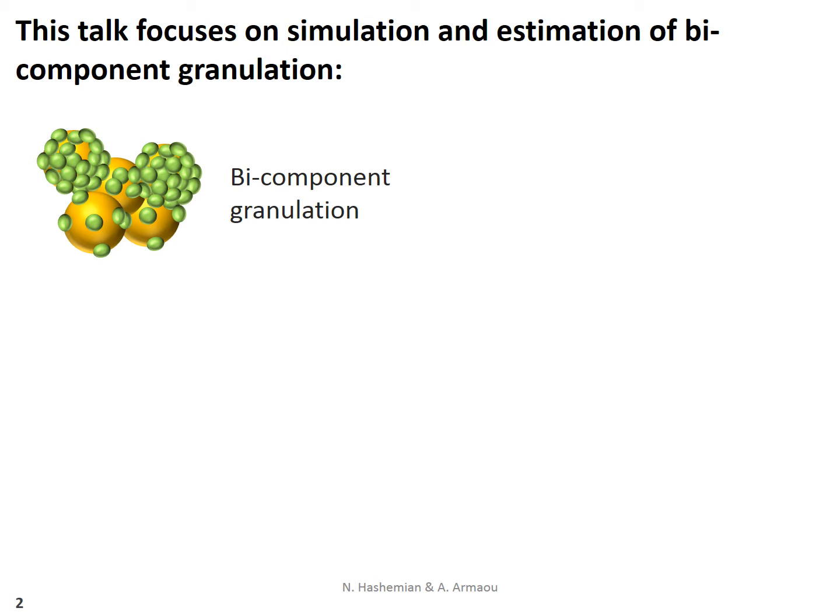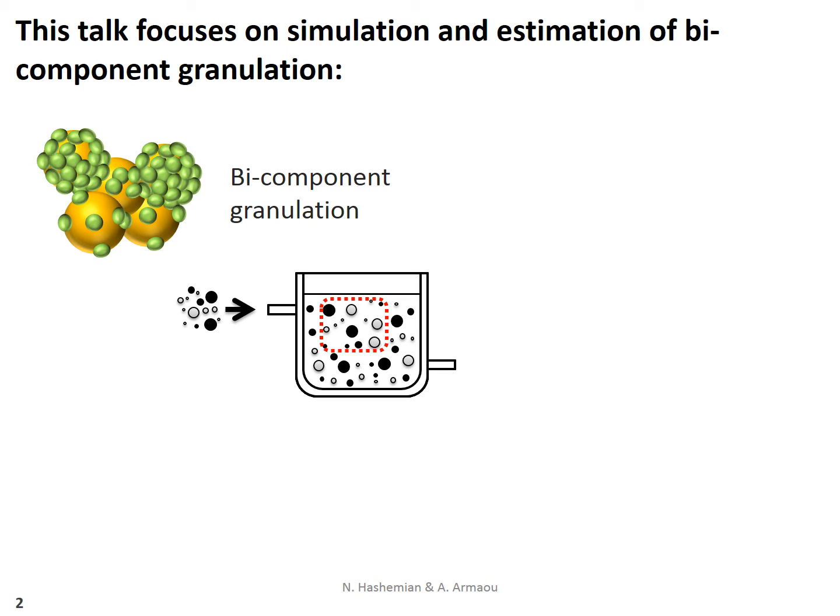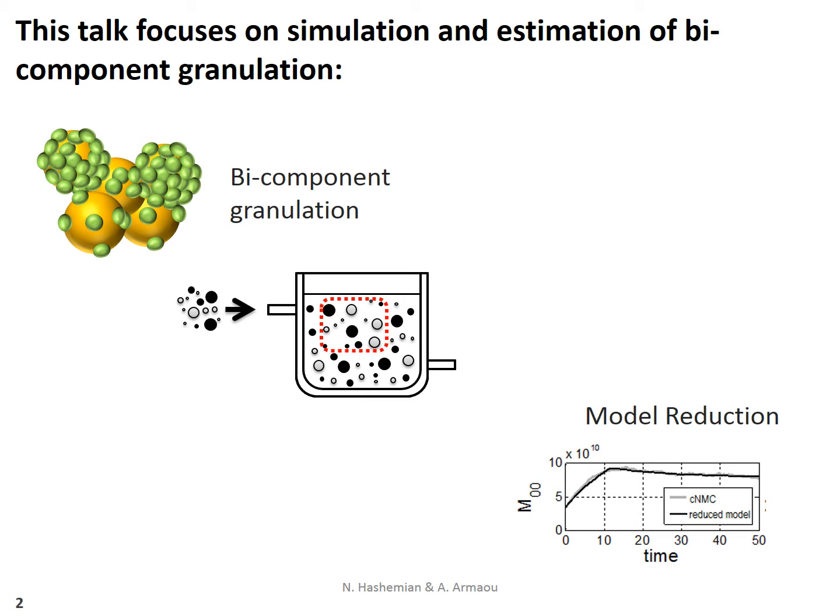In this presentation, first I explain the granulation process in the Wurster unit operation. Afterward, I will explain the constant number Monte Carlo method to simulate this process. This method is reliable but very slow, and we can't use this approach in granulation control or estimation. So I am going to introduce a new method to reduce the original model down to an ordinary differential equation set, employing Laguerre polynomials and method of moments. The state variables of this reduced model are moments of the output's distribution.